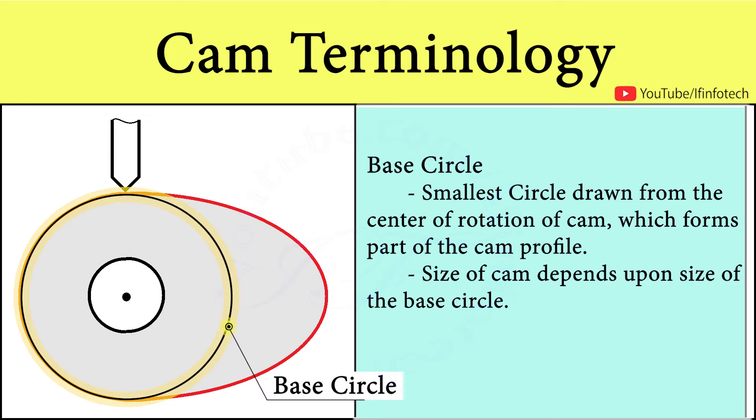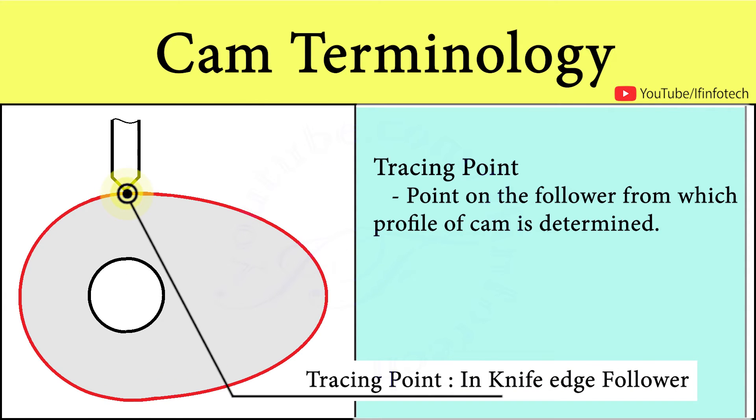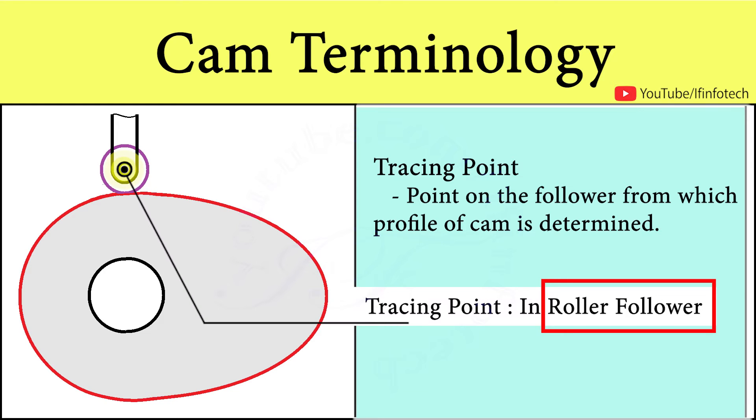Next is tracing point. It is the point on follower from which profile of cam is determined. In case of knife edge follower, knife edge itself is tracing point. In roller follower, center of roller is tracing point.